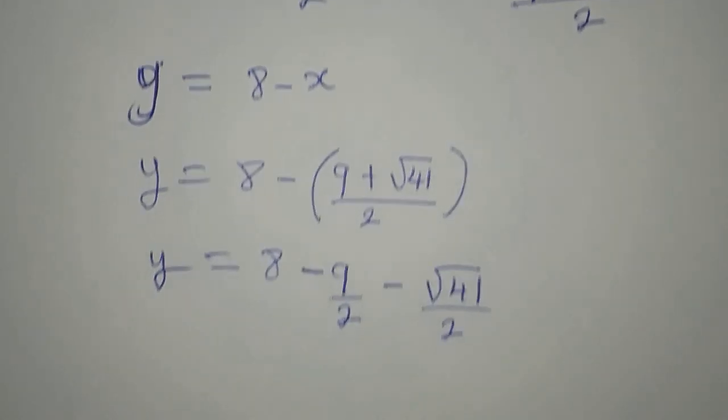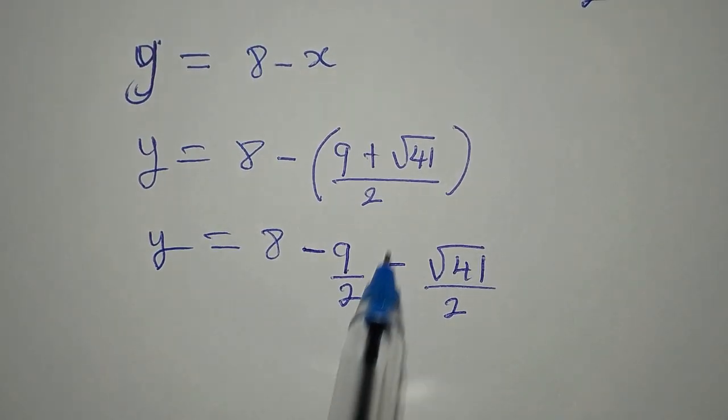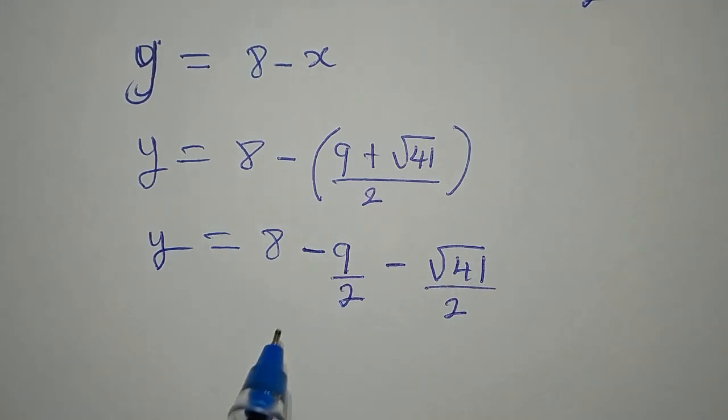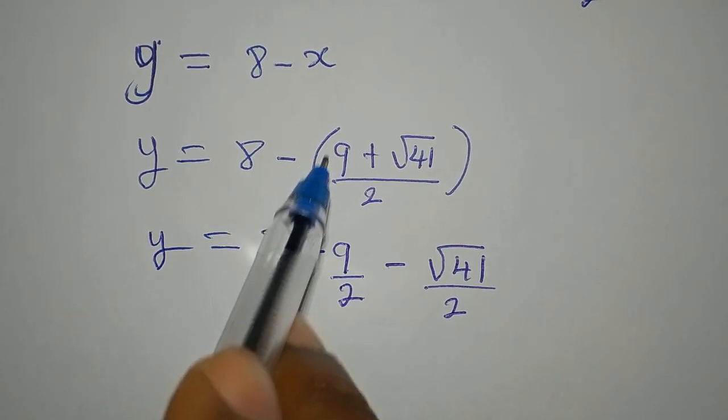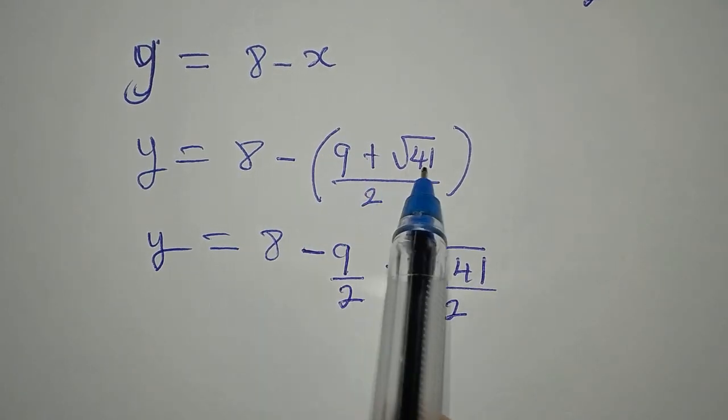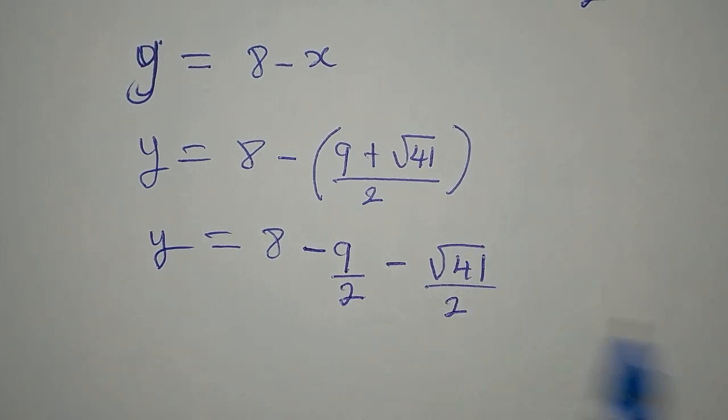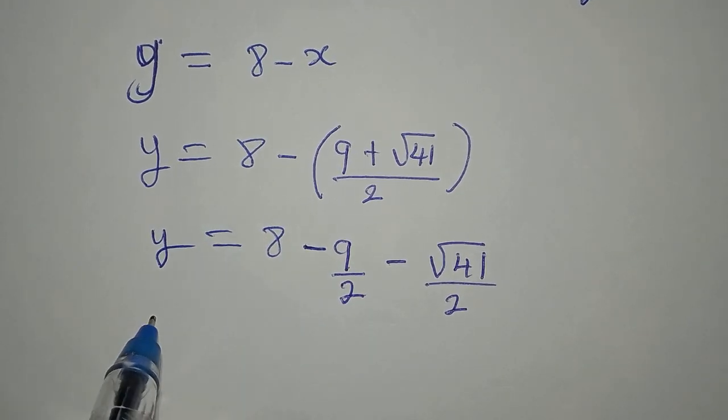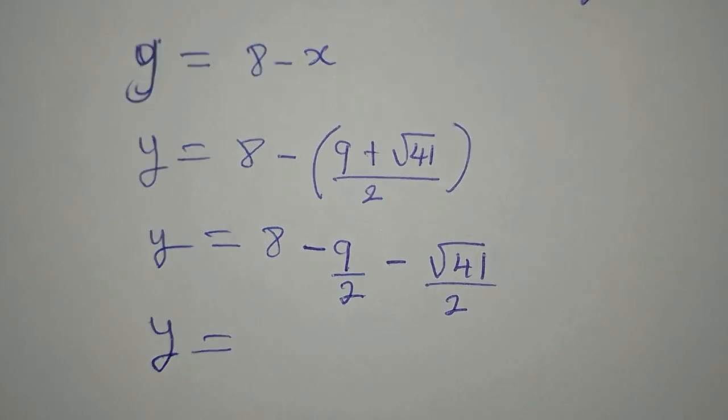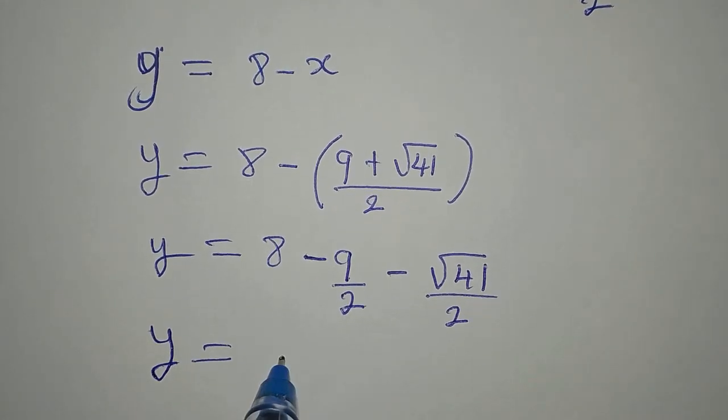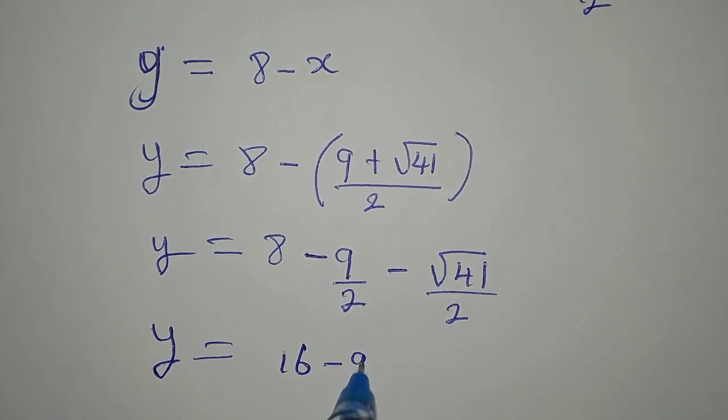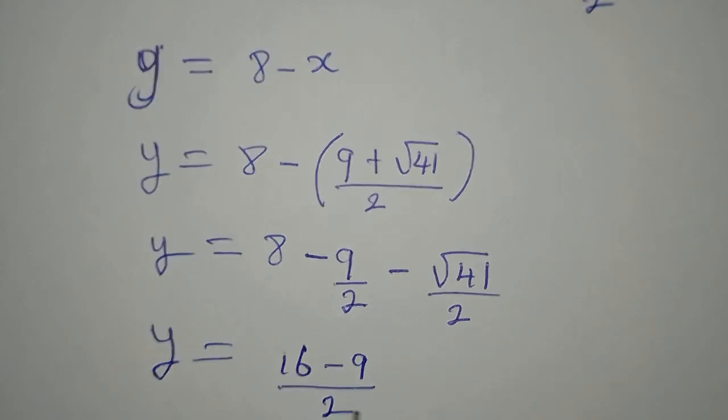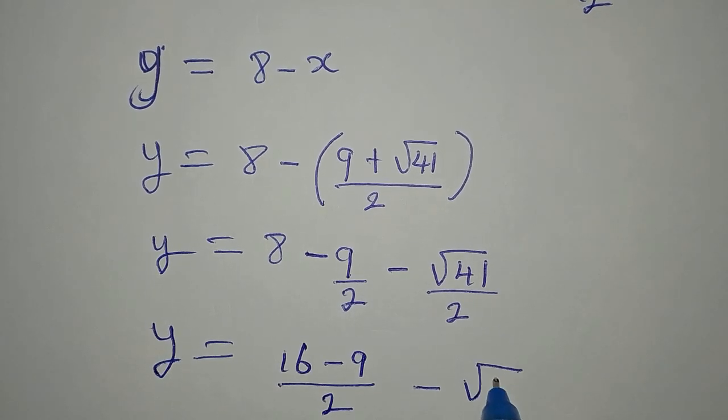Then minus square root of 41 over 2. What I've done is to split this into 2. So we have negative 9 over 2, then negative root 41 over 2. You can decide to simplify this. So y is equal to 16 minus 9 over 2, then minus square root of 41 over 2.